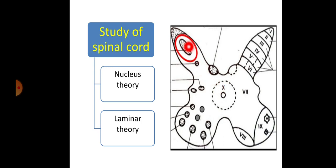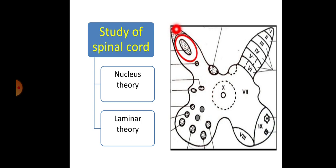This grey matter is studied under two headings: one is the nucleus theory, and another one is the laminar theory. The collection of cell bodies is called grey matter. If this grey matter is embedded in the deeper part of the CNS, then it is called a nucleus. According to the nucleus theory, the grey matter of the spinal cord is further divided into subdivisions — nucleus 1, nucleus 2, nucleus 3, nucleus 4, and so on. Each specific nucleus is related to a specific function.